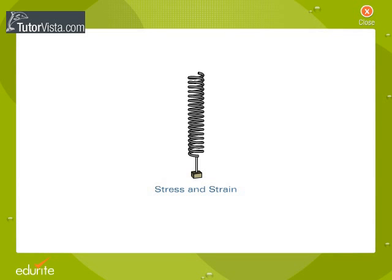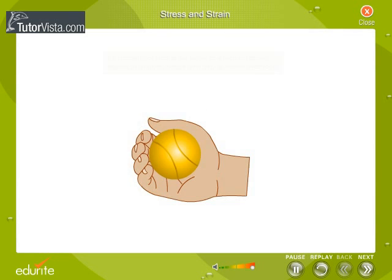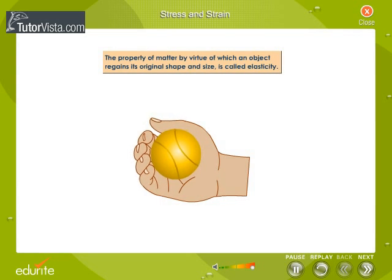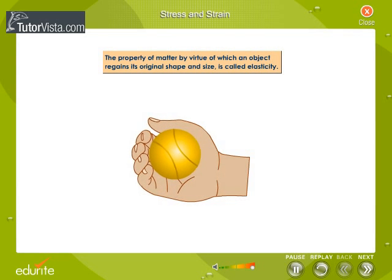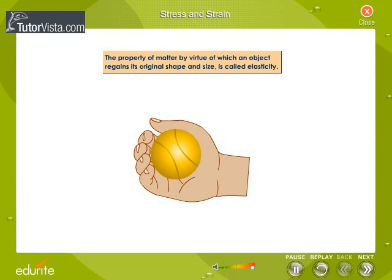Stress and Strain. What is elasticity? The property of matter by virtue of which an object regains its original shape and size is called elasticity.